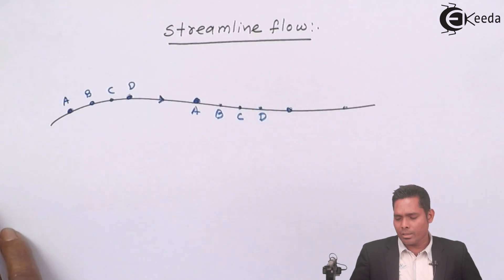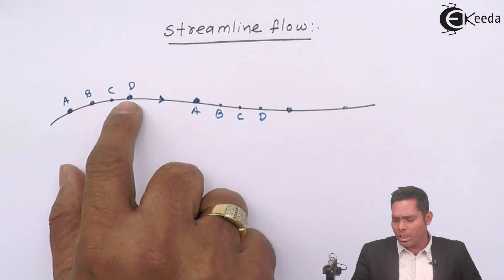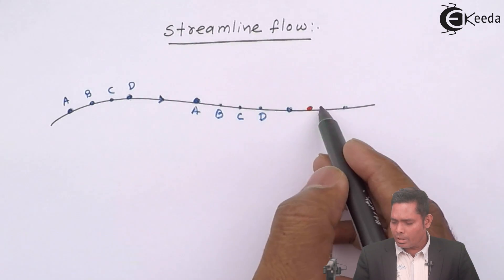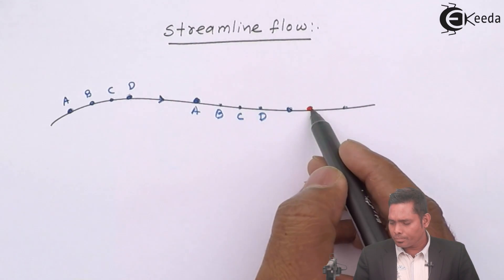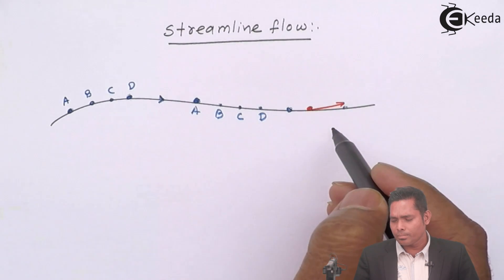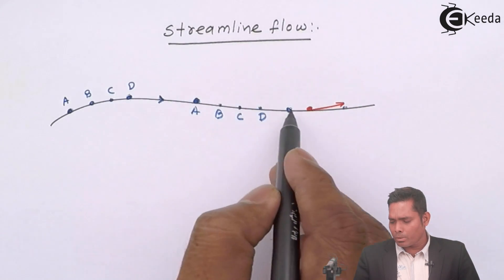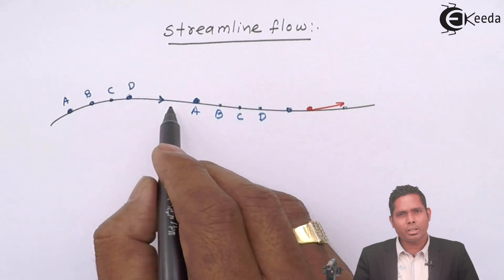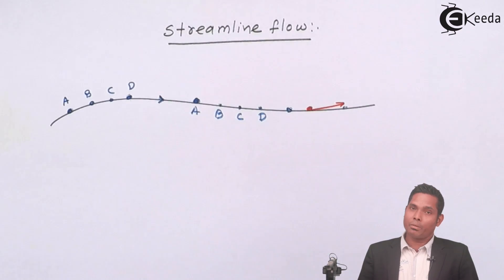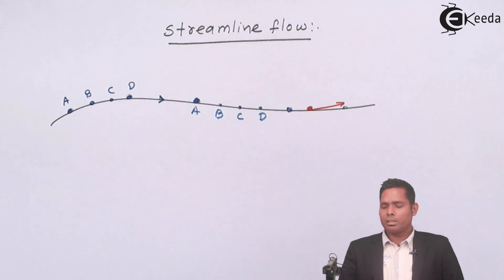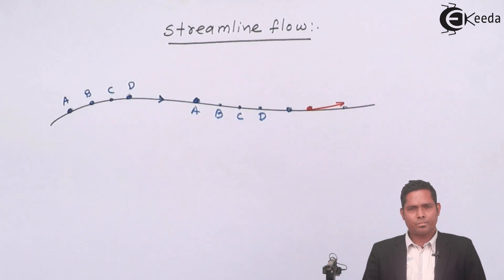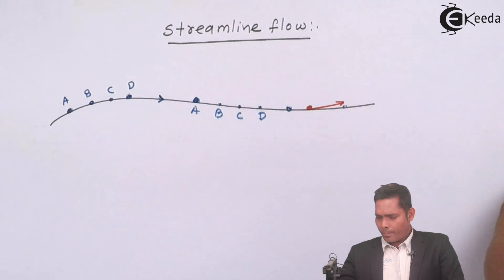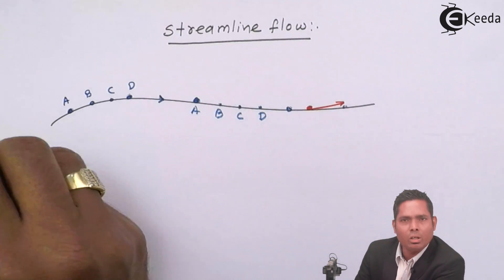Another important thing is velocity at any point. Suppose at any time particle D passes through a certain point with a certain velocity, then C will also pass through that point, and all particles will pass through that point. If all particles passing through a given point have the same velocity, then this flow is called Streamline Flow. We will discuss each property one by one, starting with the definition.